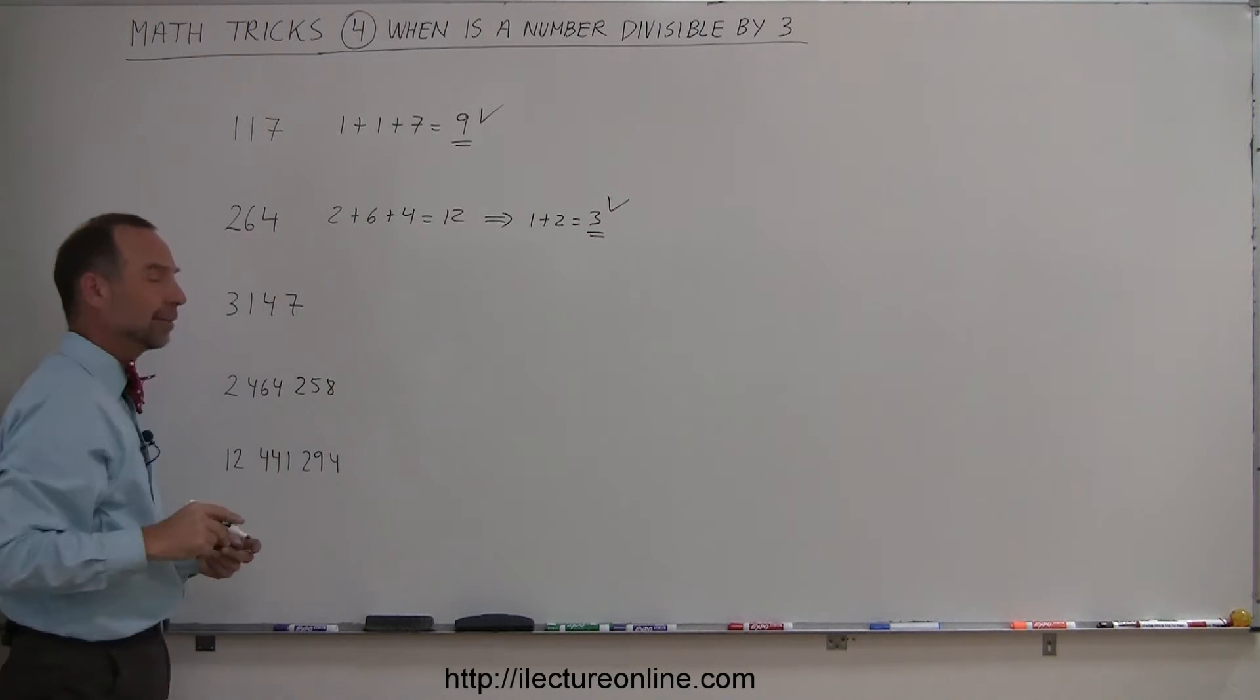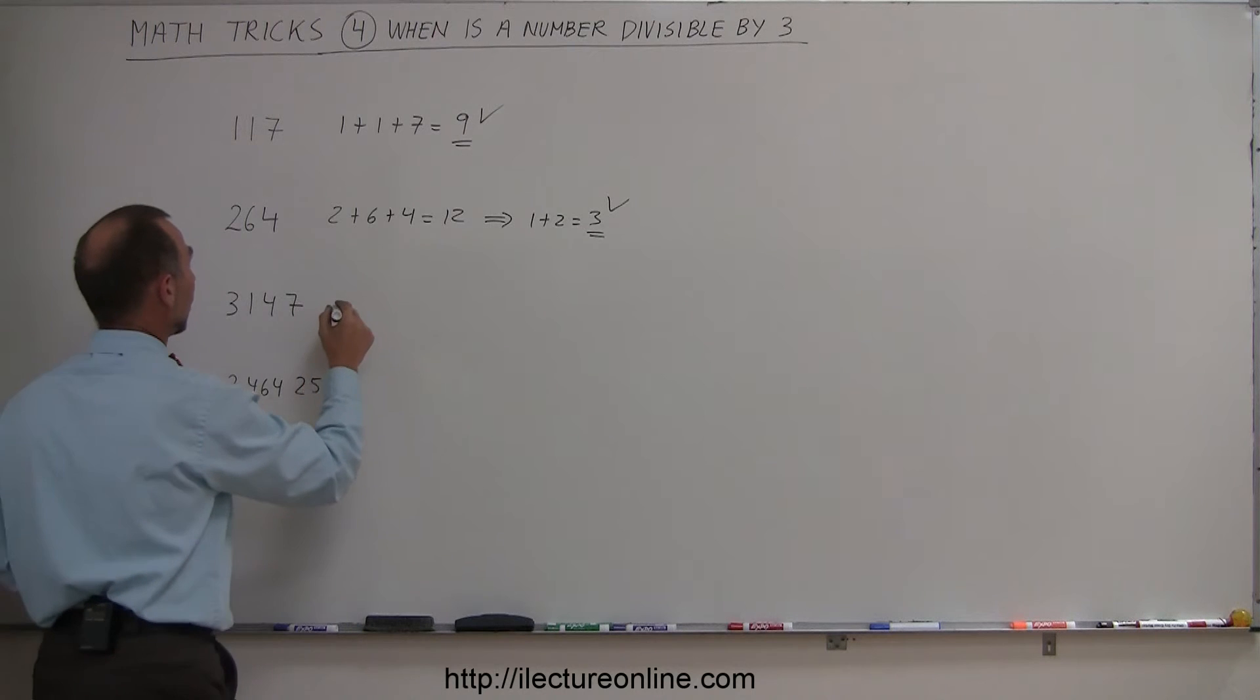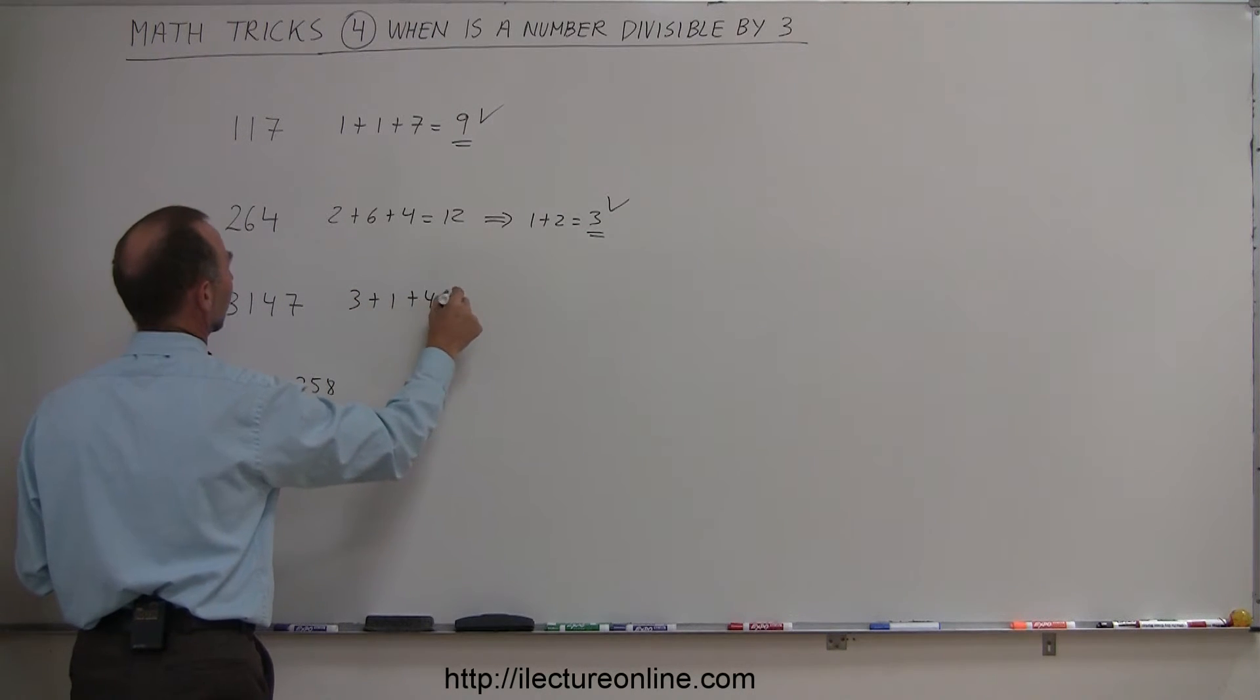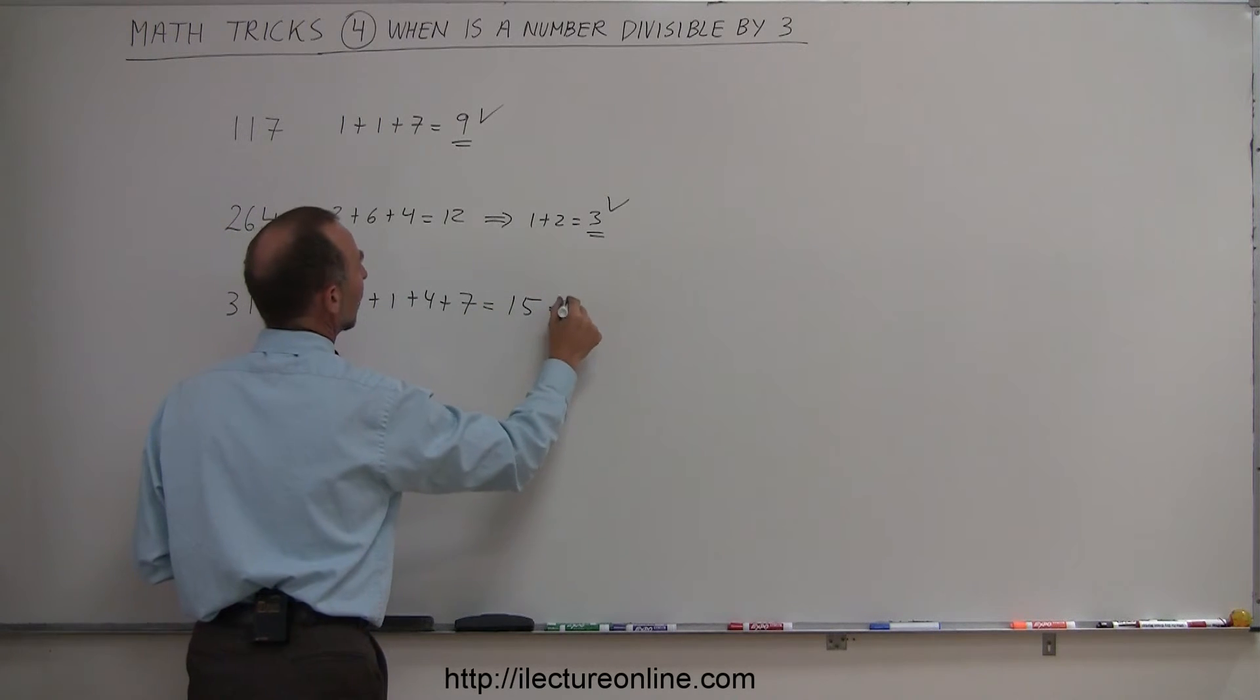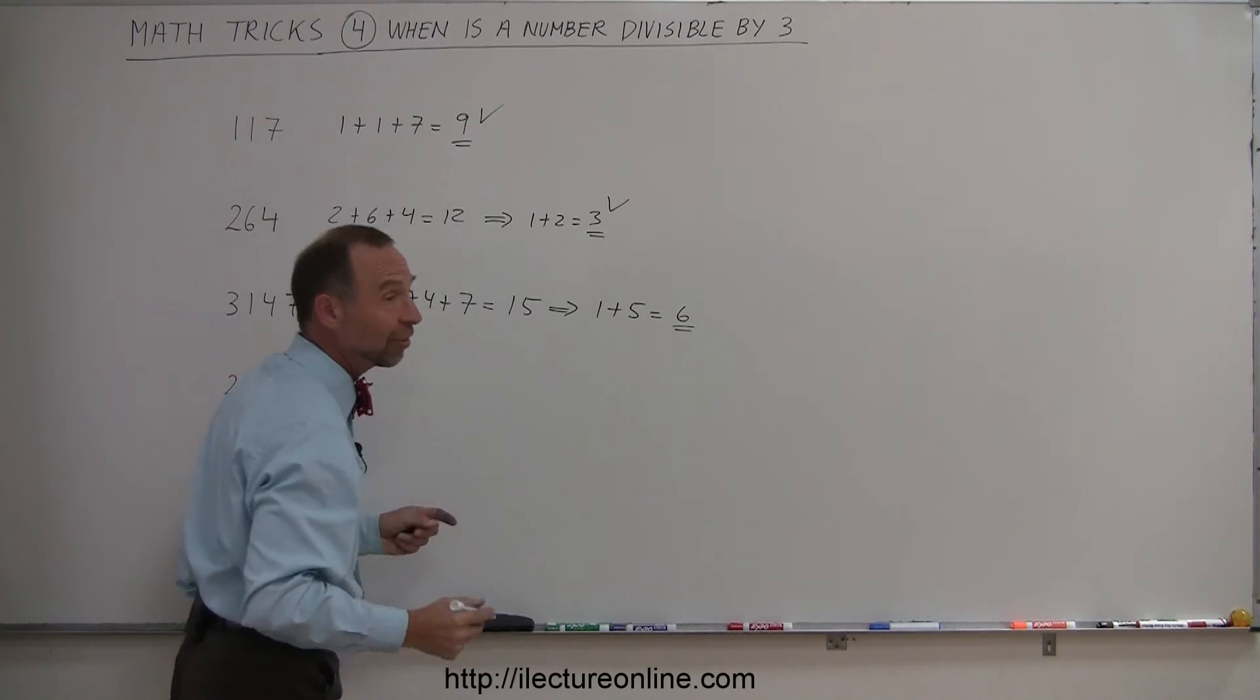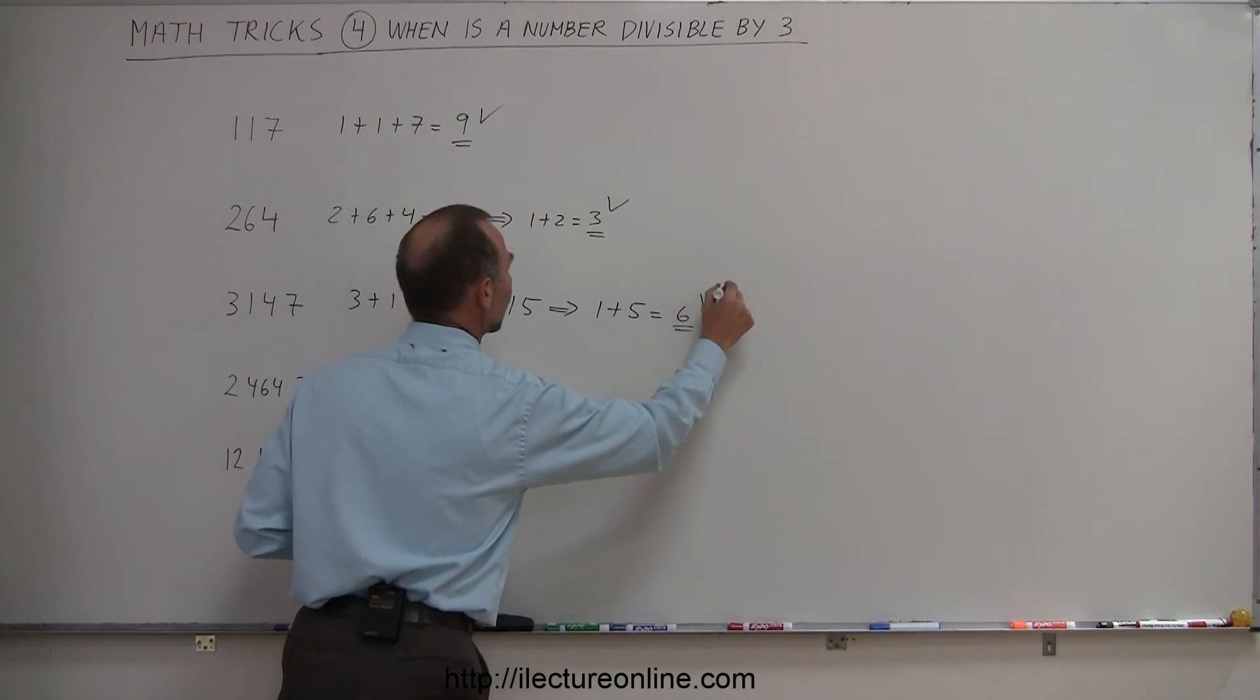How about this number right here? They get bigger, but no problem. We simply have to add the digits together. So this is equal to 3 plus 1 plus 4 plus 7. That is equal to 4, 8, 15. Then we go ahead and add 1 plus 5, and we get 6. Since 6 is divisible by 3, that means this number is divisible by 3. That checks.